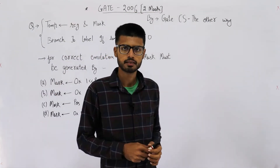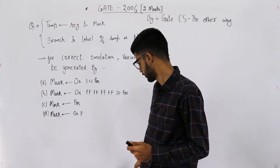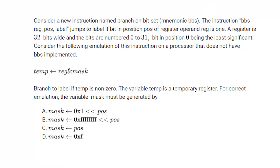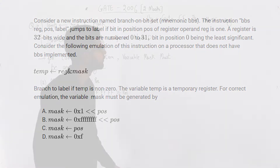Welcome back. This question was asked in GATE 2006. The question reads: consider a new instruction named Branch on Bit Set, mnemonic BBS. The instruction BBS takes operands: register, position, label. A register is 32 bits wide and the bits are numbered from 0 to 31, bit position 0 being the least significant.